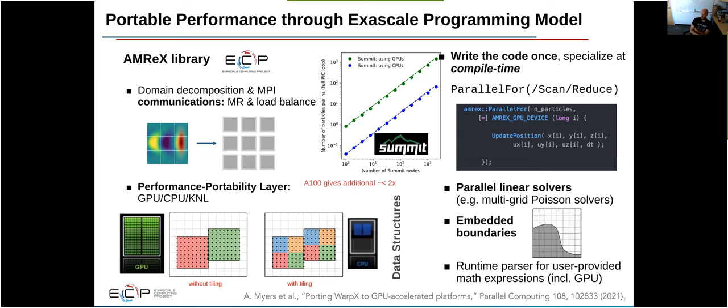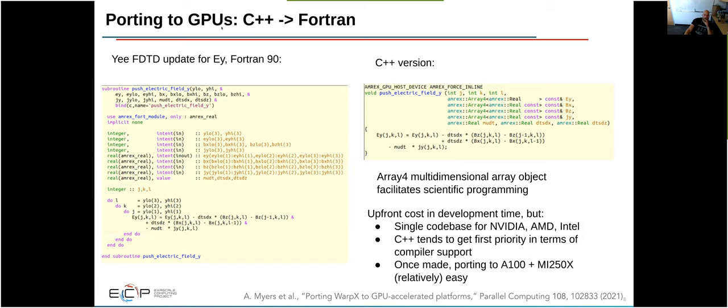A few other things we get from AMReX: the parallel linear solvers for solving Poisson's equation, embedded boundary support, and there's also a runtime parser for user-provided math expressions that can run both the CPU and the GPU that we use in WarpX. So a bit about the porting to GPU process. So in order to use these parallel for routines, we had to port the kernels in WarpX from Fortran to C++. So on the left, this is what a routine, this is one of the finite difference solvers that's available in WarpX, updating the electric field in the Y direction. This is what it looked like in Fortran, and this is what it looked like in C++. The original WarpX code was a mix of C++ and Fortran code, and the Fortran was kind of for the computationally expensive kernels that crunched the numbers.